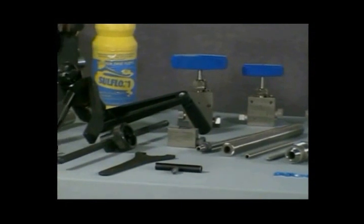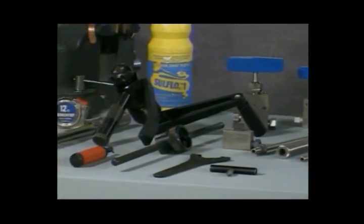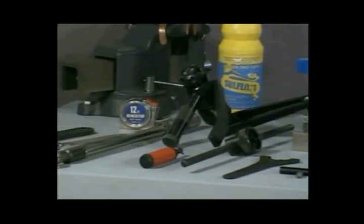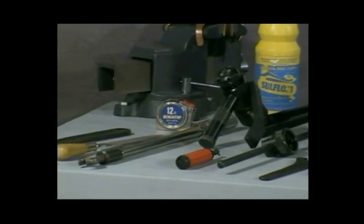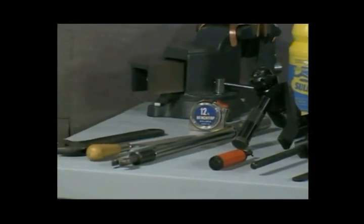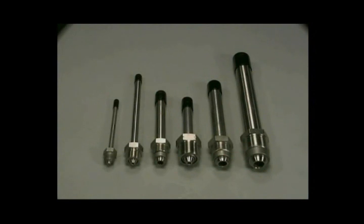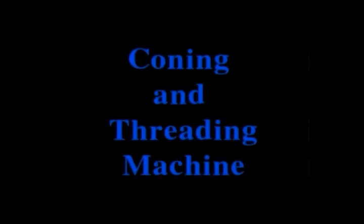Recognizing that any product must be assembled and installed properly in order to function efficiently, Autoclave presents this demonstration to show the correct procedure for coning and threading tubing for medium and high-pressure valve and fitting connections of Autoclave's model AEG-CTM2 coning and threading machine.